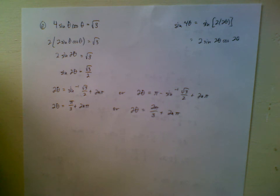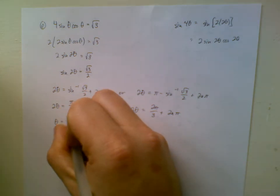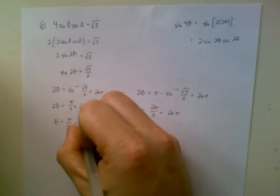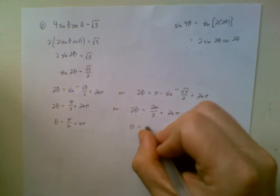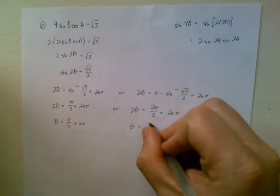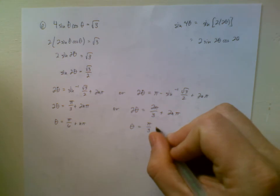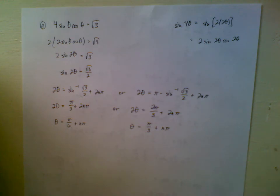We still have to solve for theta, of course, so let's divide through by 2. Ooh, okay, so here we'd get pi over 3, right?